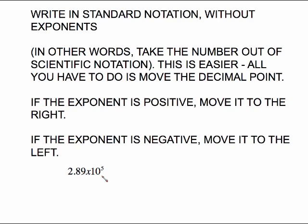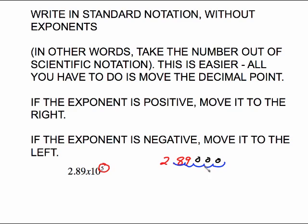Here is a number in scientific notation — 2.89 times 10 to the fifth. Since the exponent is positive, we move the decimal to the right. Let me rewrite this: 2.89, positive five, so that decimal needs to go five places to the right: 1, 2, 3, 4, 5. In each of those places I have to put zeros. So the number in standard notation is 289,000. Notice a positive exponent gave us a big number.